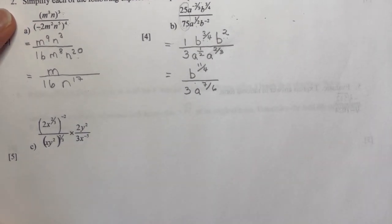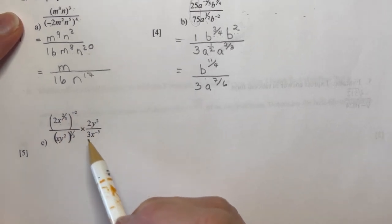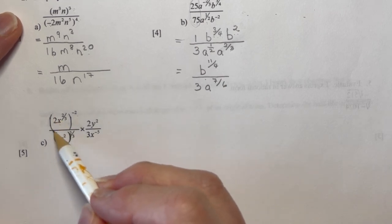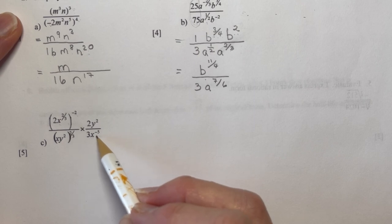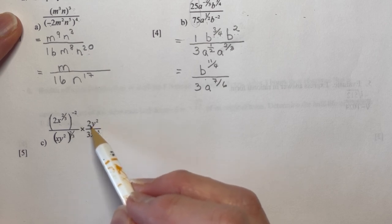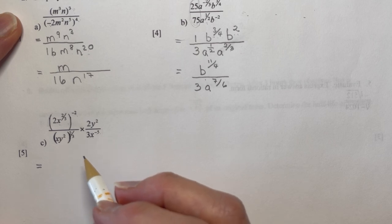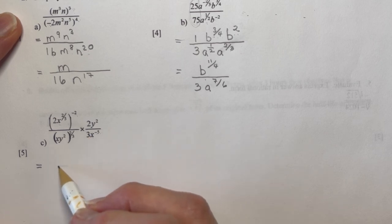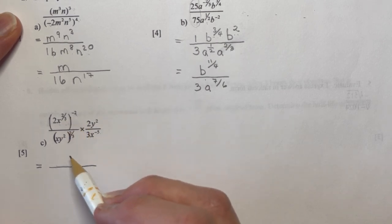For the next question here, we have 2x to the two-thirds to the minus 2. Now you have to be careful because, as you can see, this is the whole thing is to the minus 2. Whereas this little one here, this minus 5 is only for the x. So the 3 is going to stay where it is. So the first thing I'm going to do is make me some positive exponents.